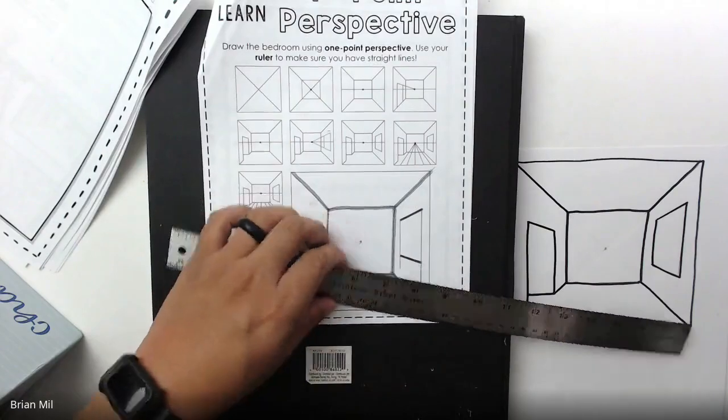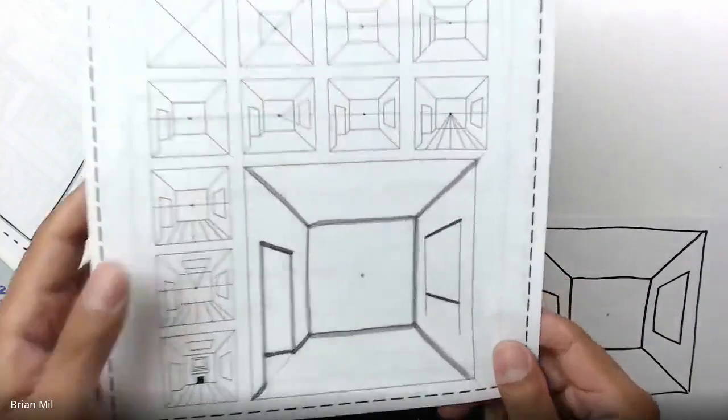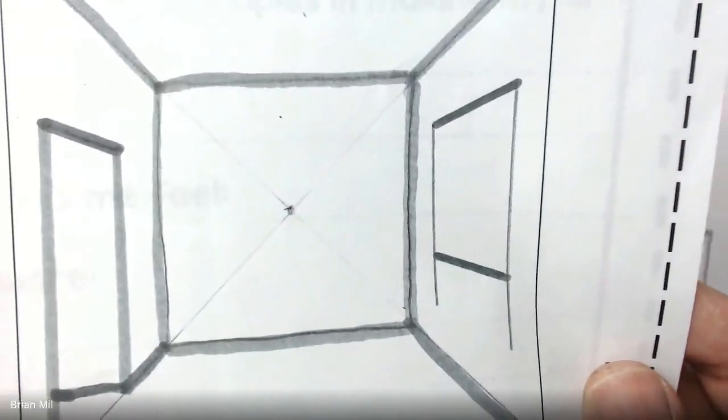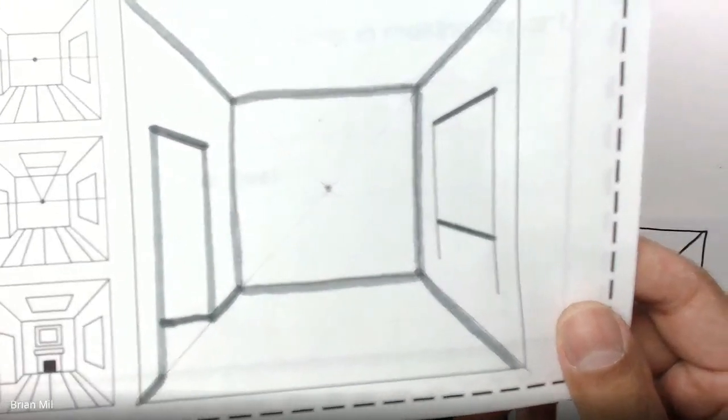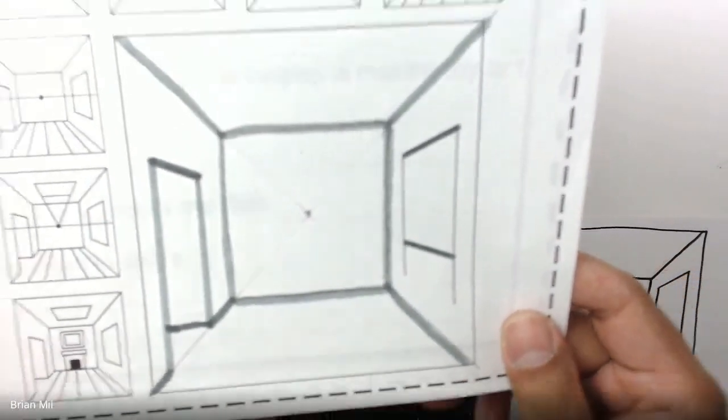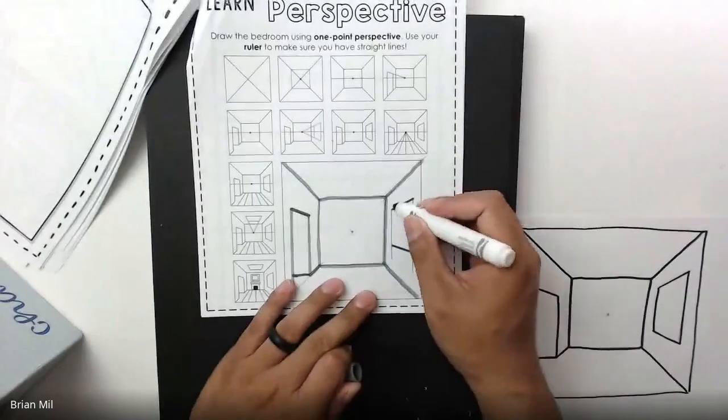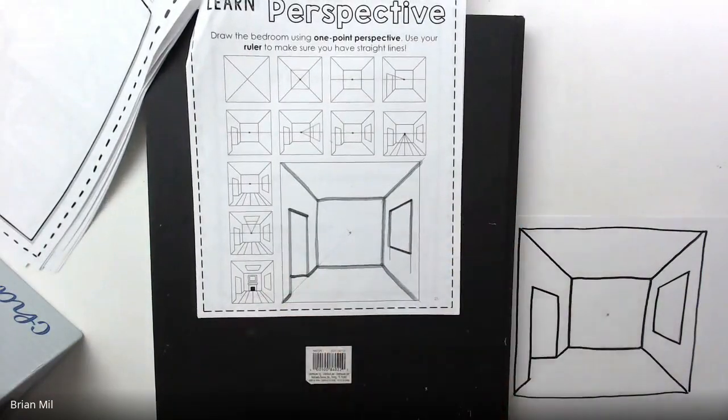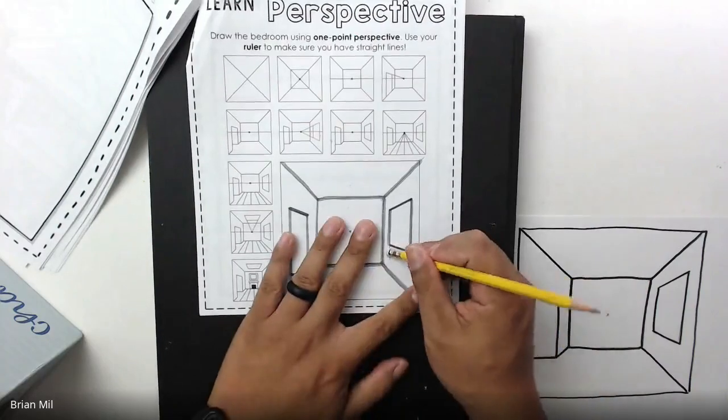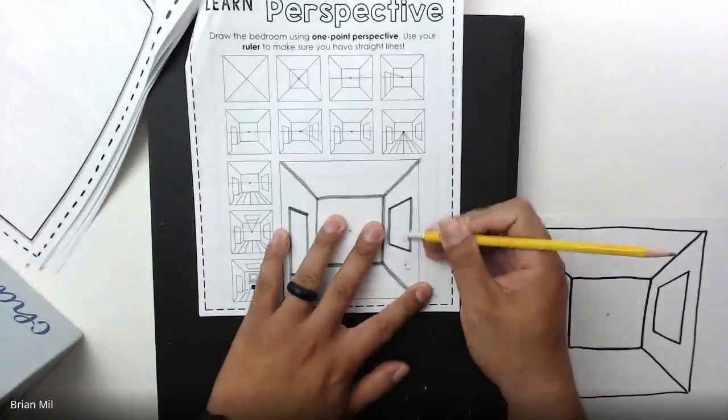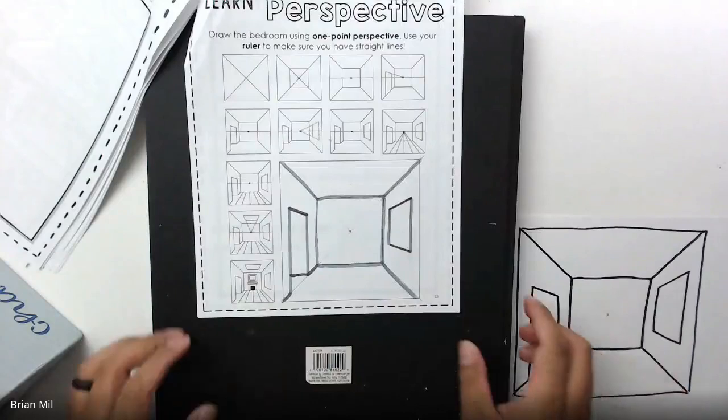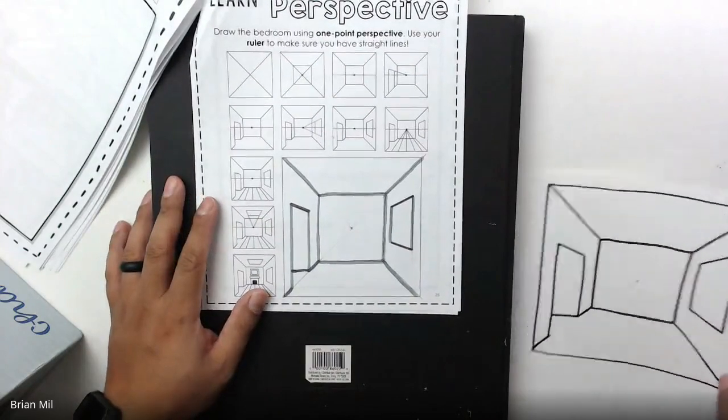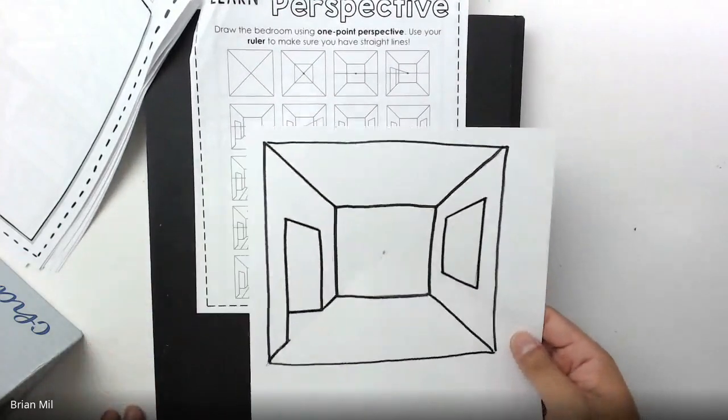So now if I remove my ruler, you guys can see why I used a pencil. Because now I can kind of figure out the exact points of where my window ends. And then I can erase the parts of the window I don't need. And there you go. So that's basically what I did with last class. As you guys can see right here.